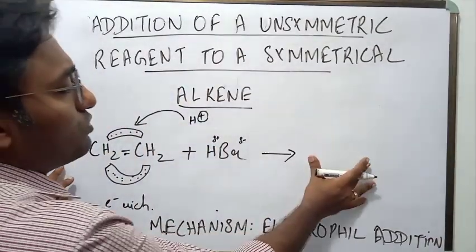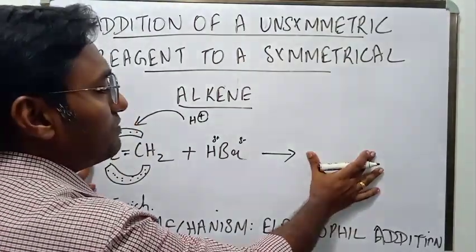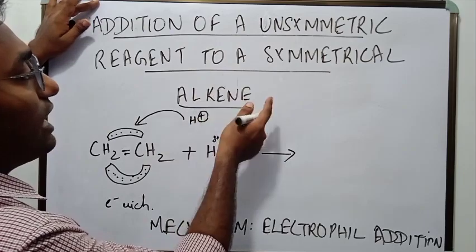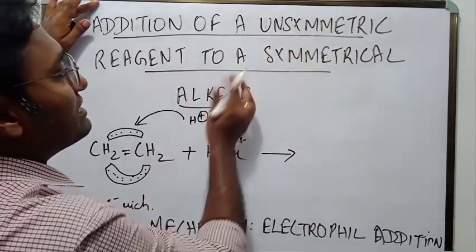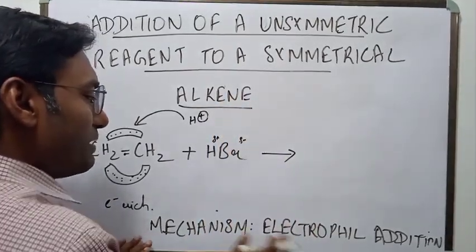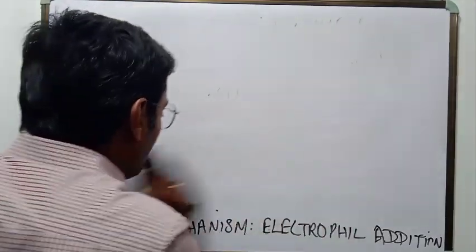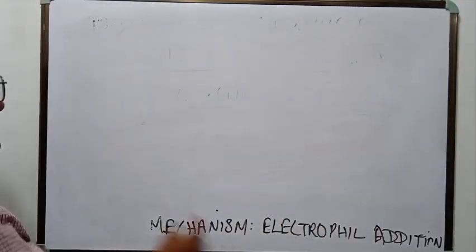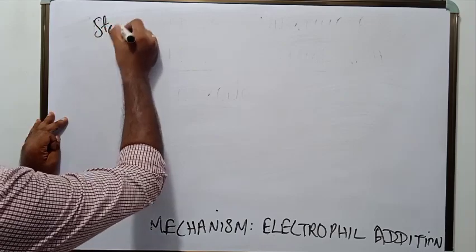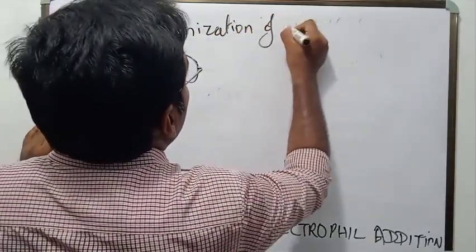We will come to the product of this reaction at a later stage. After we discuss the mechanism we will know what product is formed and answer the question: what would happen if an unsymmetrical reagent adds to a symmetrical alkene? Electrophilic addition reaction is the mechanism. All electrophilic addition reactions have three steps. Step number one: ionization of the unsymmetrical reagent.